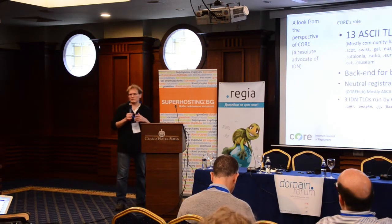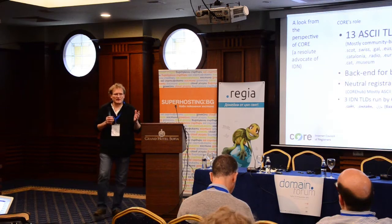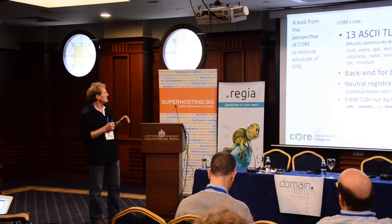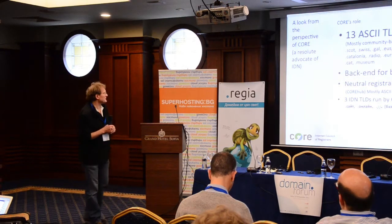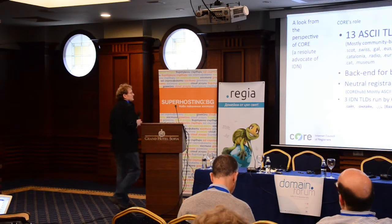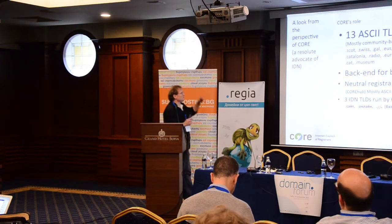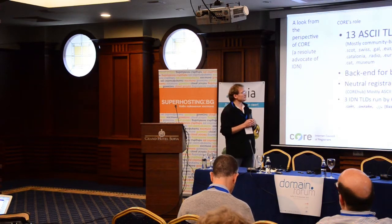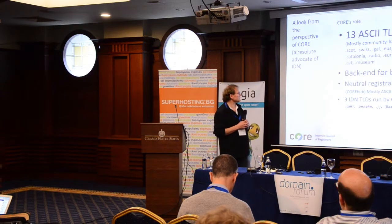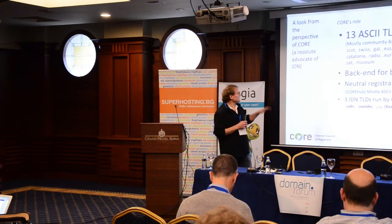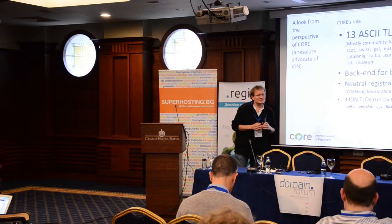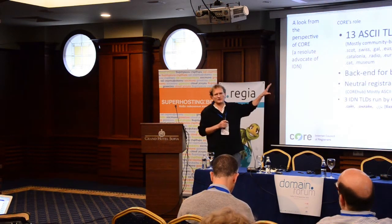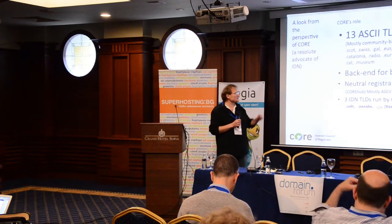I'm trying to look at things the way we, from Core, see it, because we are forced to look from our own interest. Core has a number of activities. In the context of the new GTLDs, we've got 13 ASCII TLDs to take care of one way or another, because we're back-end providers — and so these are public suffixes. We've got back-end activities for branding these. It's a different kind of business, but of course we cannot allow anything to fail there. This is going to be very important.